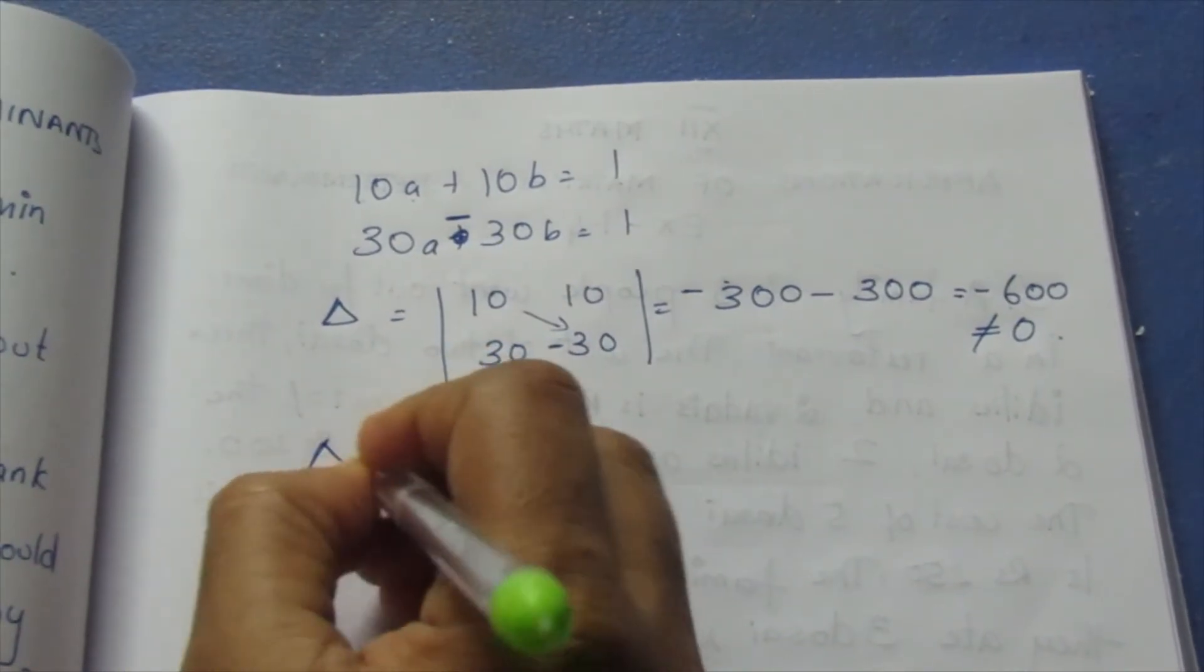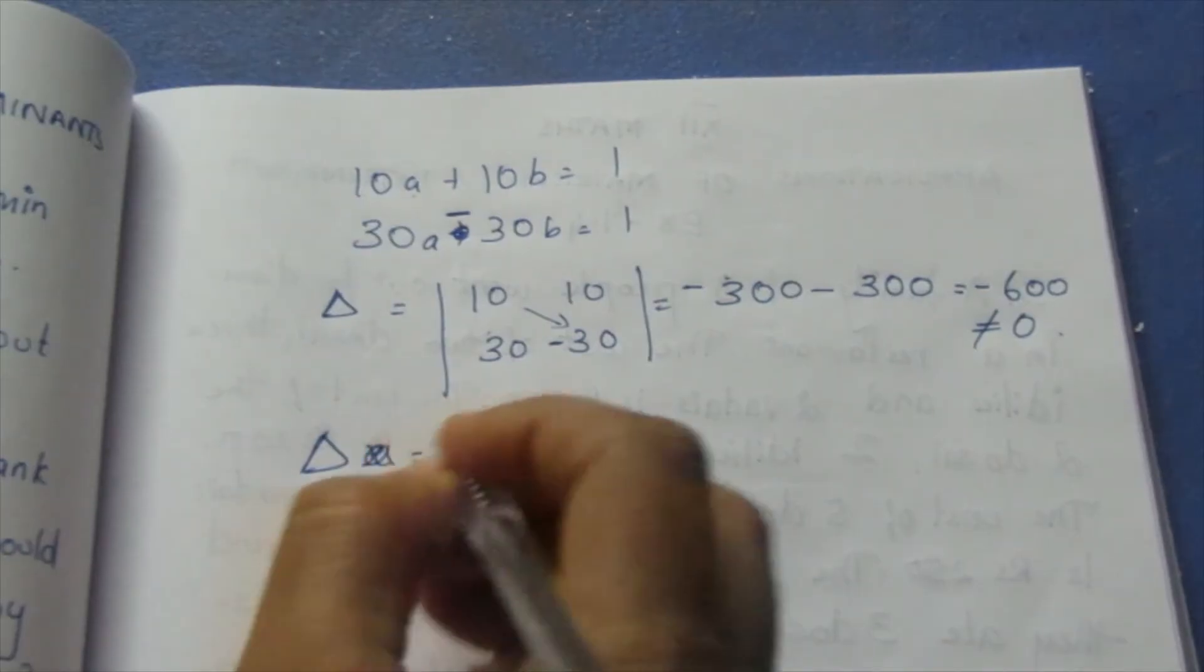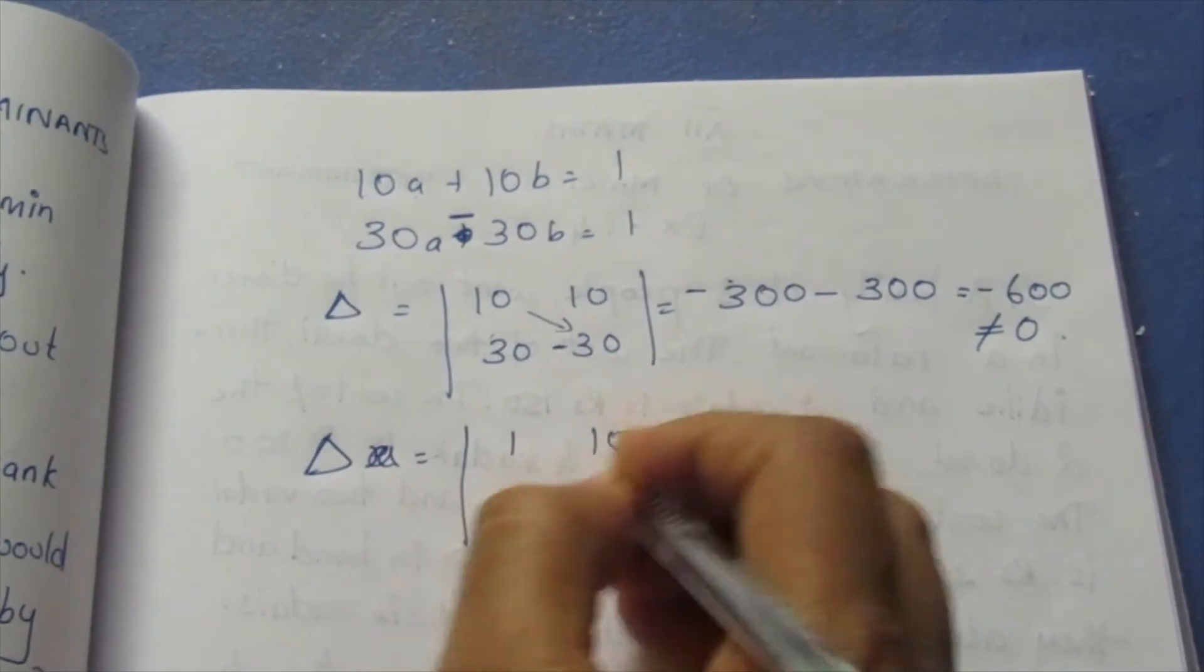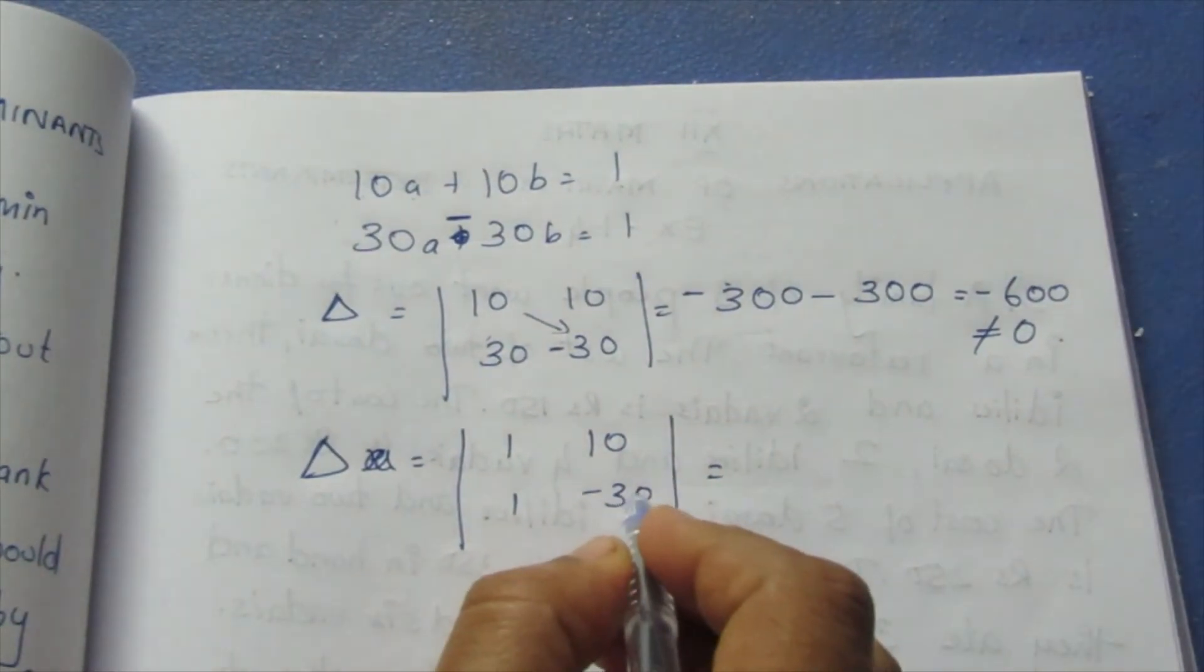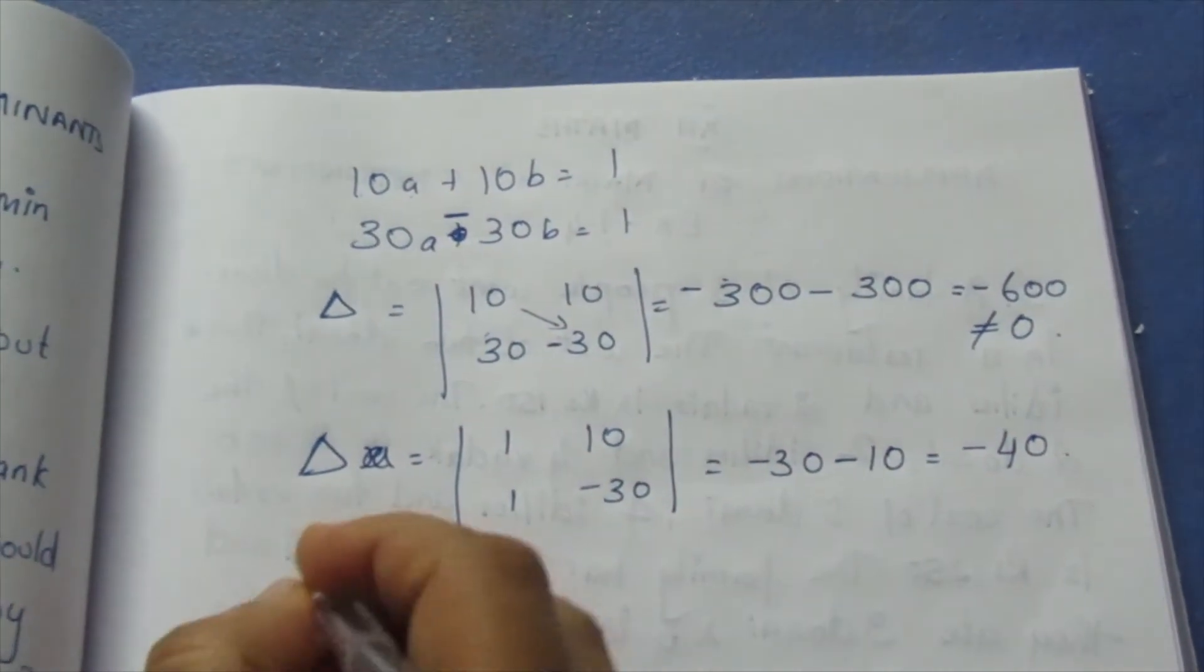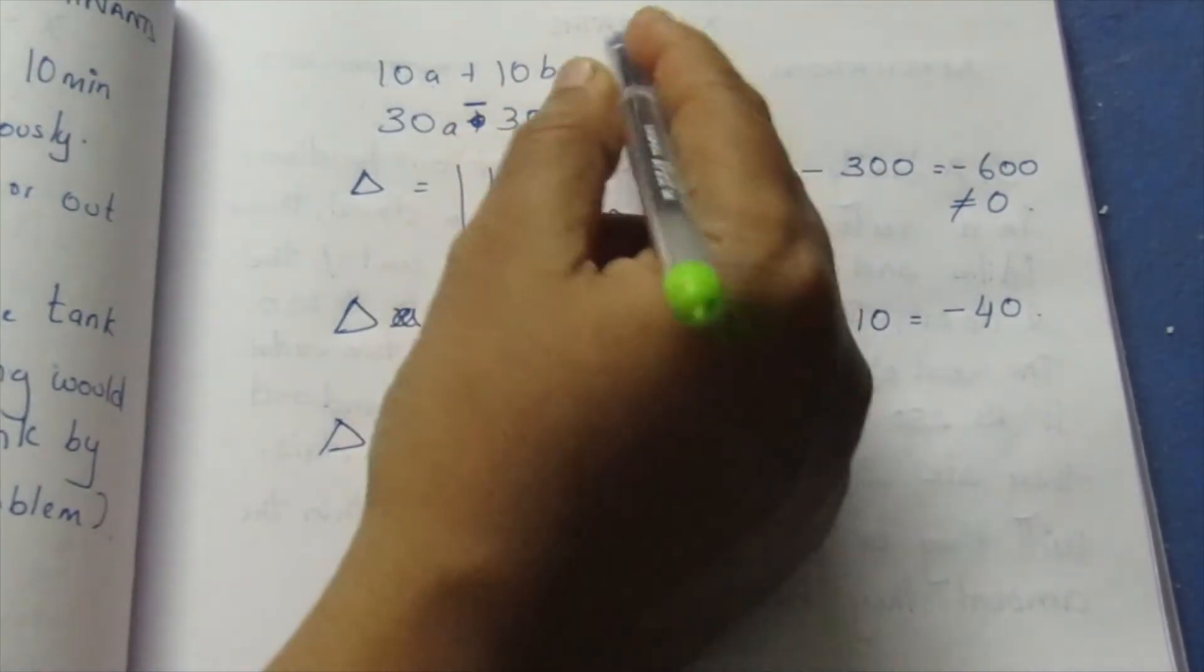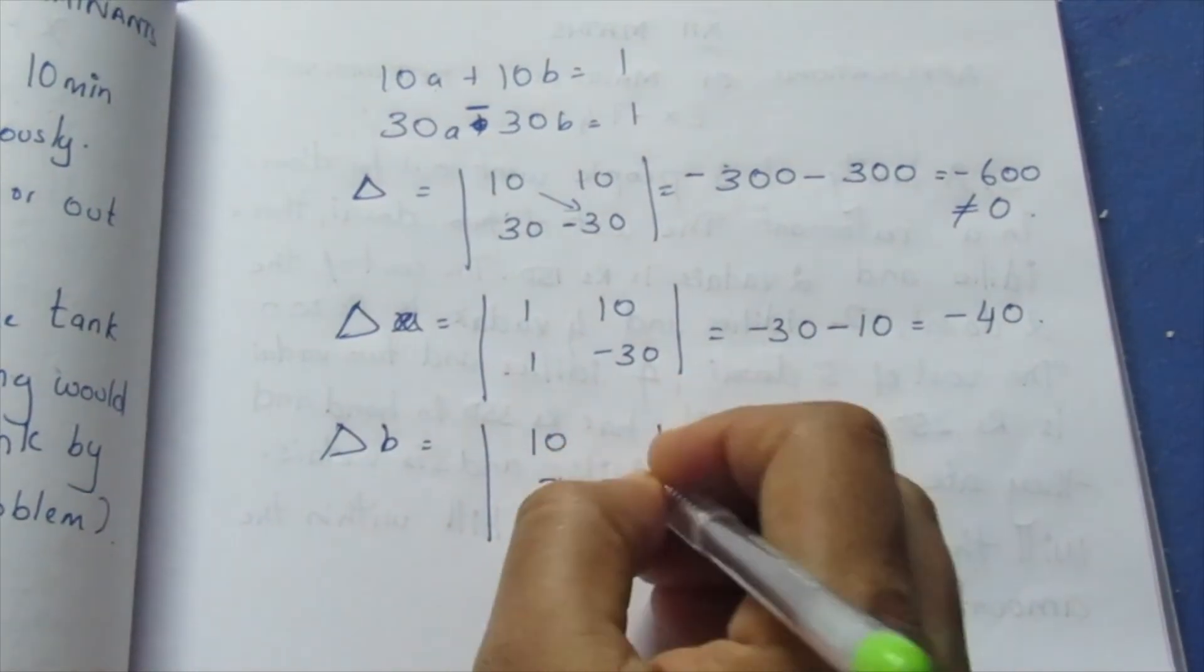Determinant A equals 1, 1, 10, minus 30. Now we multiply: 1 times minus 30 minus 1 times 10 equals minus 40. Determinant B equals 10, 30, 1, 1.